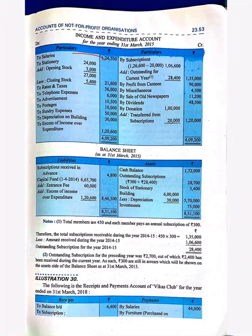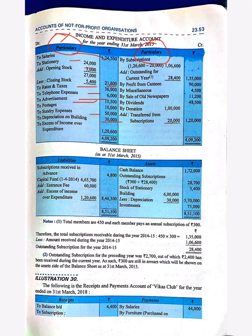Now on the expenditure side: salaries as it is. For stationery, we have to add the opening stock and deduct the closing stock — it will be 21,600. Rent and tax same as it is. Telephone expense same, advertisement same, postage same — they are all payments, so they will be mentioned in the expenditure column, i.e., the debit side. Depreciation on building: building was 6,00,000, so 5% will be 30,000.